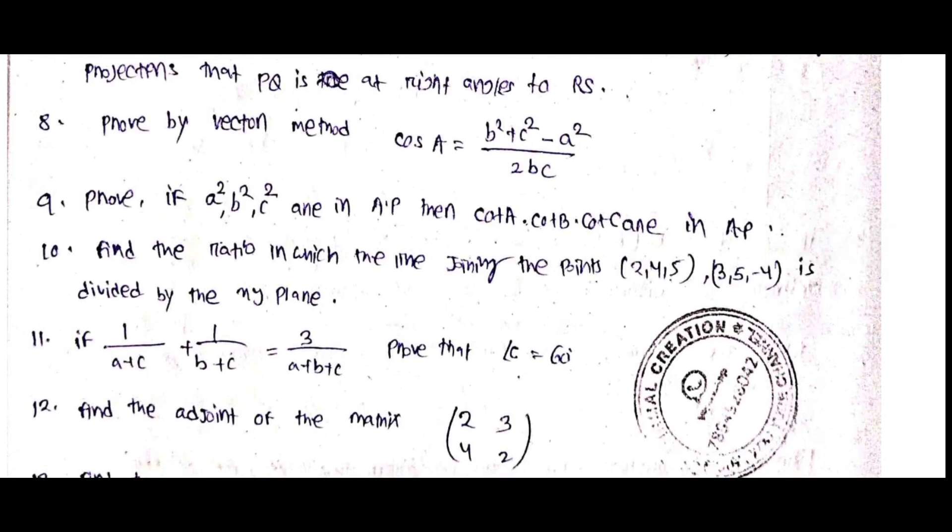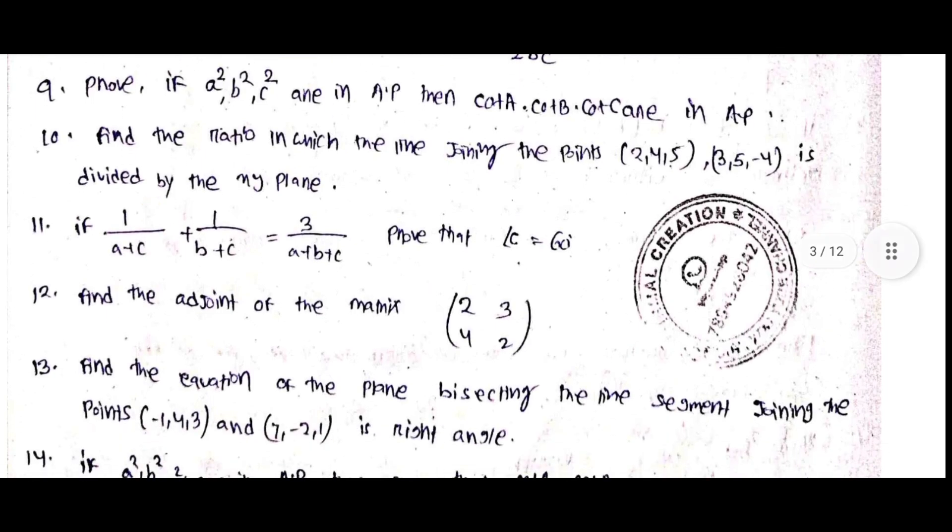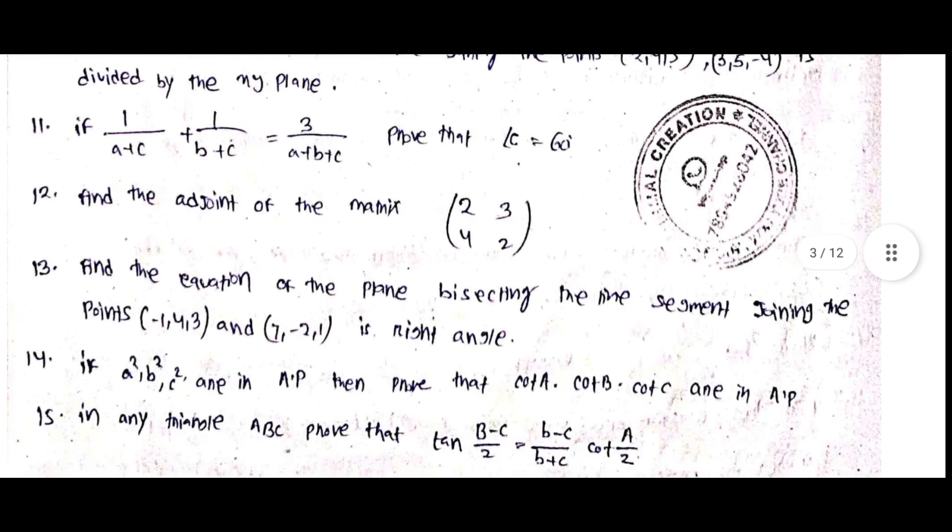Prove by vector method cos A equal to b square plus c square minus a square divided by 2bc. Prove if a square, b square, c square are in AP then cot A, cot B, cot C are in AP. Find the ratio in which the line joining the point 2, 4, 5, 3, 5, minus 4 is divided by the xy plane. If 1 by A plus C plus 1 by B plus C equal to 3 by A plus B plus C then prove that angle C equal to 60 degree.